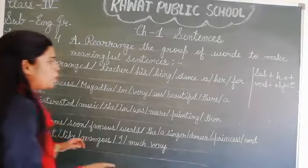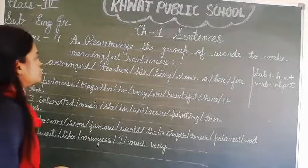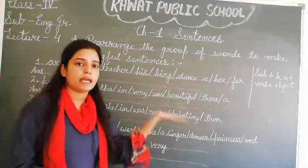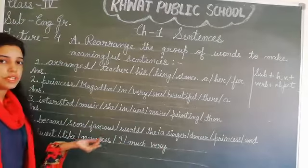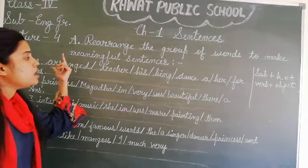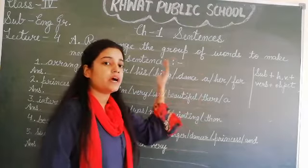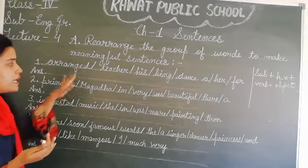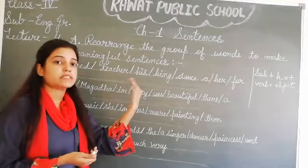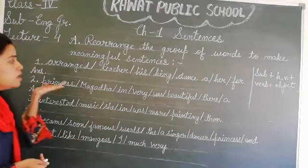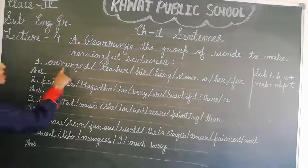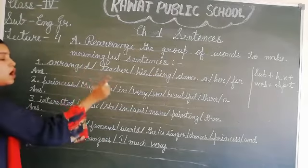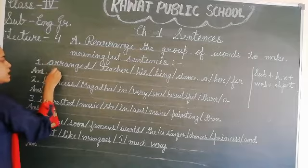Subject — what do you understand by subject? क्या होता है subject? कोई भी sentence जिसमें कोई भी person, कोई भी things, कोई भी animals — कोई भी ऐसी चीज़ जो action करता है, जो उसमें कुछ ना कुछ काम करता है — यानि कोई भी ऐसा person, bird, animals — जो उस sentence में काम कर रहा है, कि इसके बारे में वो sentence है — वो होता है subject। So here starting में हमेशा subject आएगा।